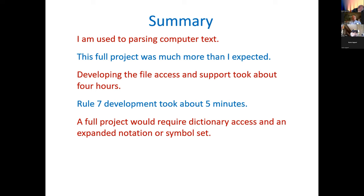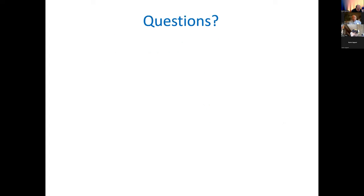By inference, one could say you could develop all the other rule sets in half an hour — I don't think that would be the case, but the simple rule took just a few minutes. A full project would require dictionary access and you'd have to expand your notation because you're handling letter combinations that would likely need their own symbols. Picking a simple target — rule seven — was easy to parse out, gave us a quick start, and it's enticing to ask whether this is motivation to continue.